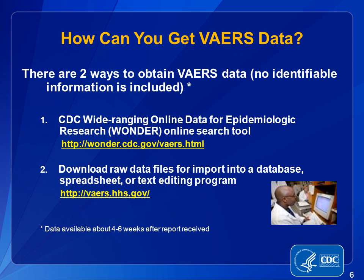There are two ways to obtain VAERS data: use CDC Wonder, which is a search engine, or download raw files from the VAERS website. This presentation will walk you through the eight steps to search Wonder. It will not cover downloading the raw data files from the VAERS website. Keep in mind, VAERS data change regularly as new reports are received by the system, so your search results may change if you repeat the same search on a later date. VAERS data on Wonder are regularly updated about every month to reflect new reports that come in each day to VAERS.